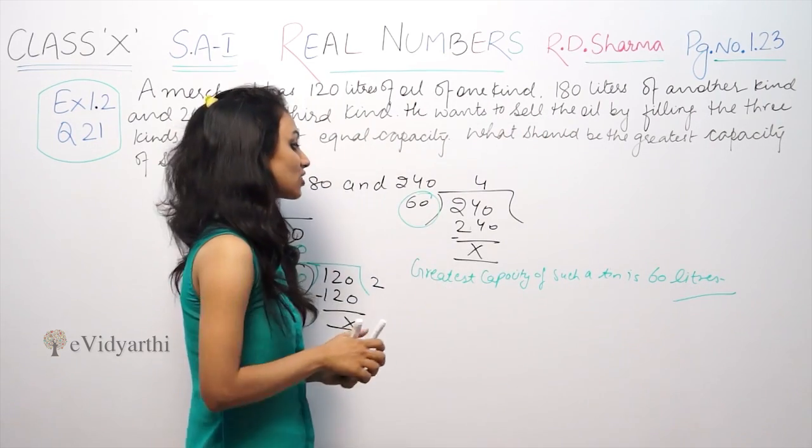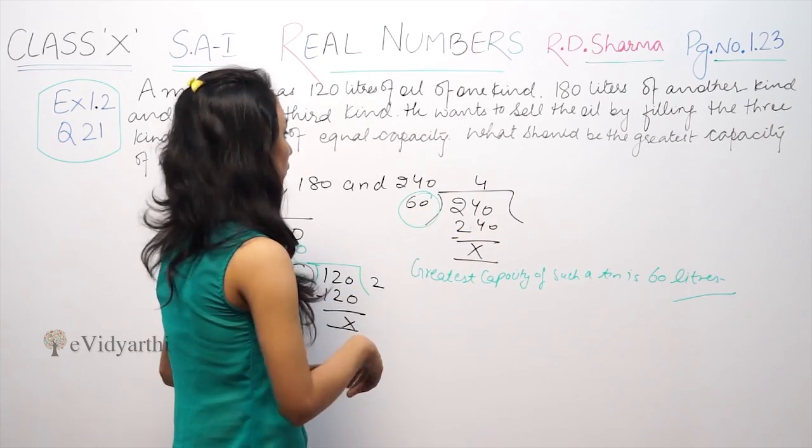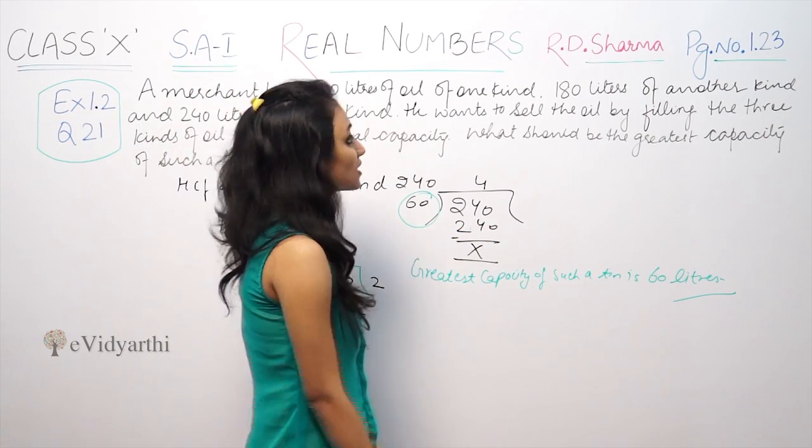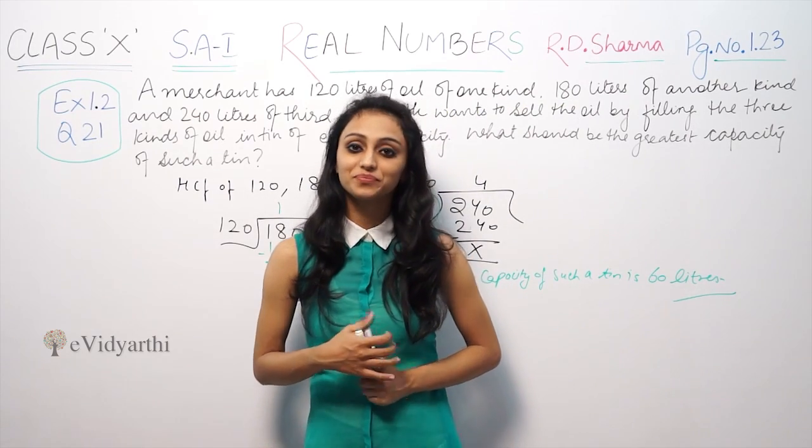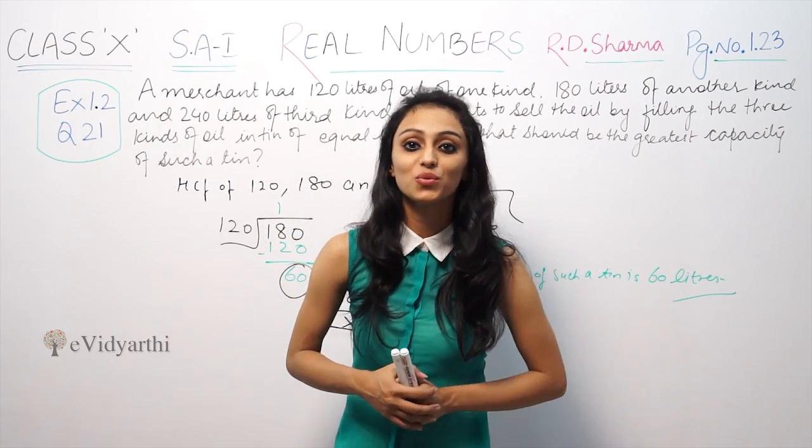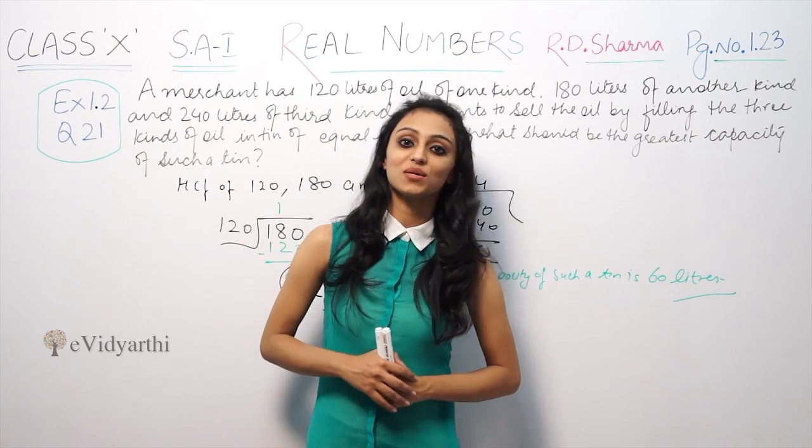The tin should be 60 liters. This was question number 21 of exercise 1.2 of R.D. Sharma. If you have any doubts, please write to us and watch the next video for more questions.